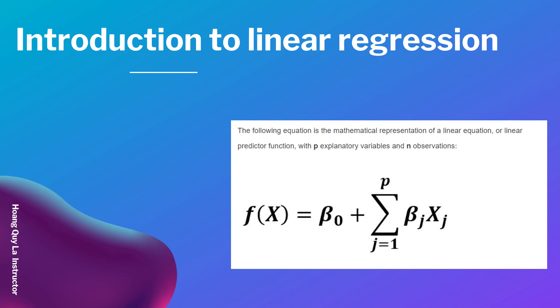As you can see, we have f(X) equals beta 0 plus the sum from j equals 1 to p, where p represents the number of explanatory variables. We have the sum of beta j times x j.